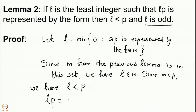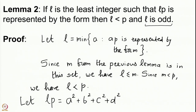Suppose we write lp = a² + b² + c² + d². Suppose this is a representation for lp by the form. Now the integers a, b, c, d are some integers; they can be even or they can be odd. If l is an even integer, let us analyze the parities.